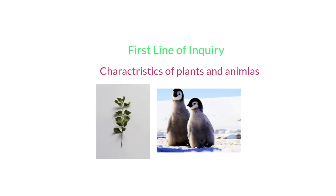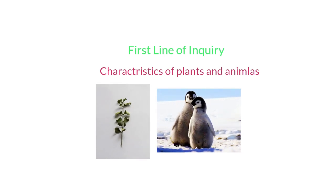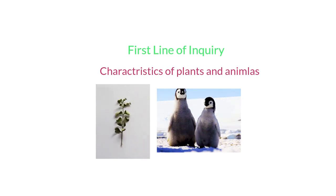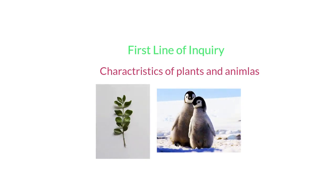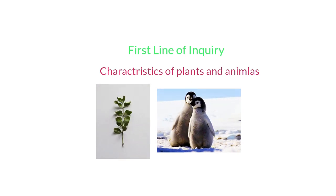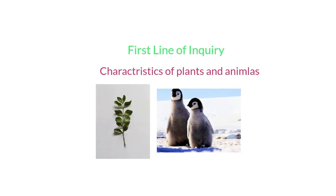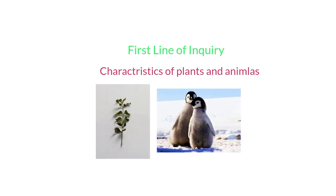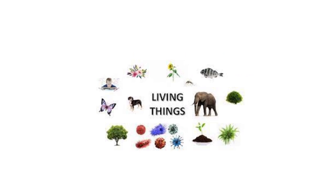In our first line of inquiry, we're going to discuss the characteristics of plants and animals. We'll learn that plants are living things and they need sunlight — they come in many shapes and sizes. Animals can move on their own, they have different coverings like fur and feathers, they eat food, and they have babies. We're going to use pictures and fun activities to understand these ideas easily.